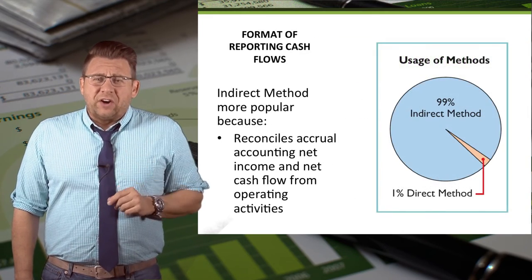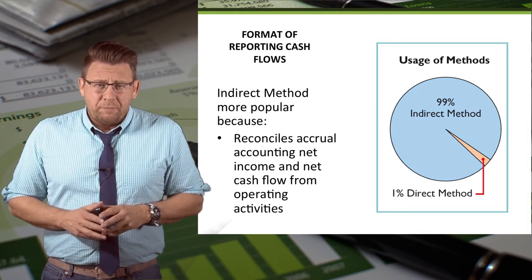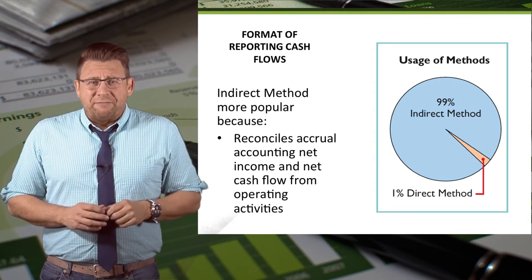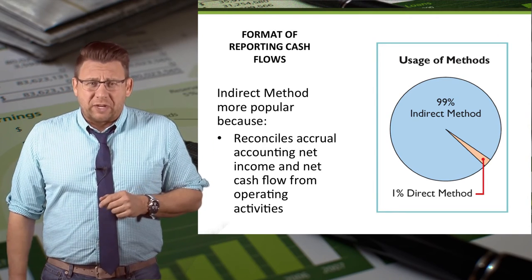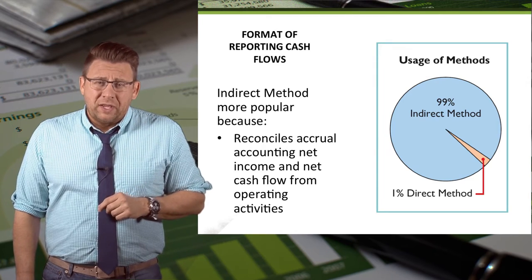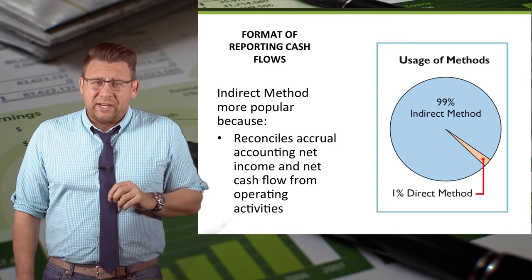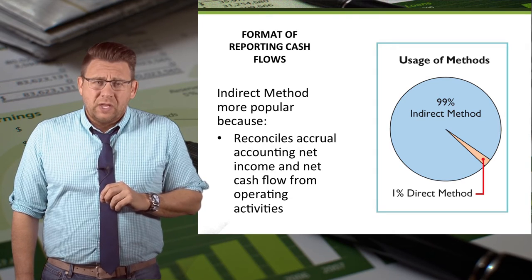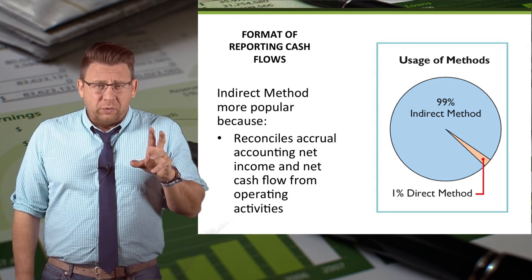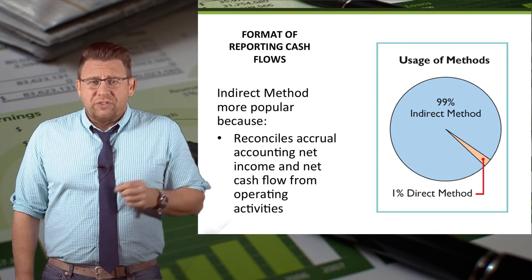The reason that there are two methods is because the FASB prefers the direct method, but industry — as you can see from the graph on the slide — prefers the indirect method. Mainly, companies prefer the indirect method because it reconciles accrual accounting net income to cash flows. Since companies' data is already reported with accrual accounting, the reconciliation is easier, most think.